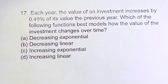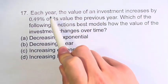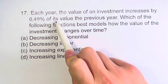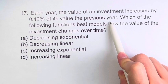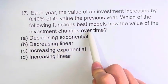Hello, and welcome back to another video. In this problem, we're told that each year, the value of an investment increases by 0.49% of its value the previous year. And we're asked which of the following functions best models how the value of the investment changes over time.